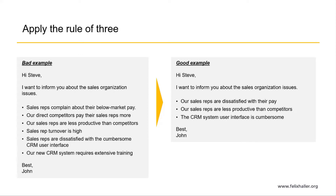To make bullet points even more impactful and effective, apply the rule of three. Every time you have a long list of action items, insights, or things you want to communicate, try to reduce the number to three to five.